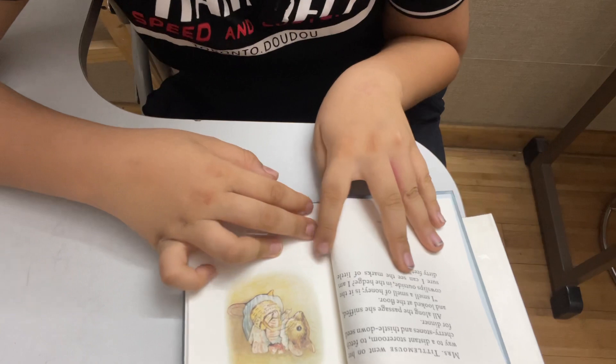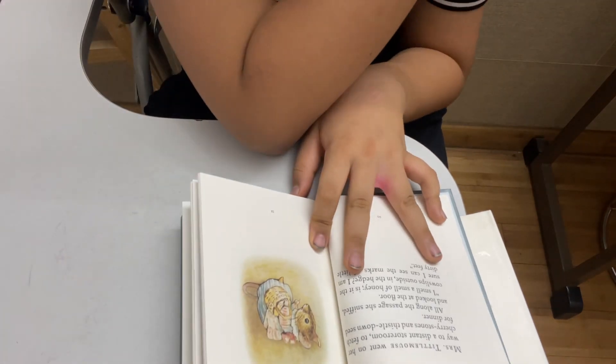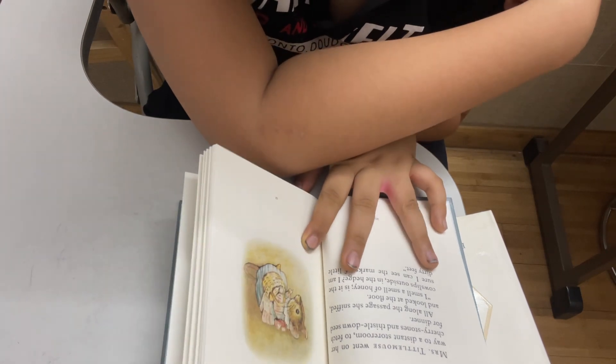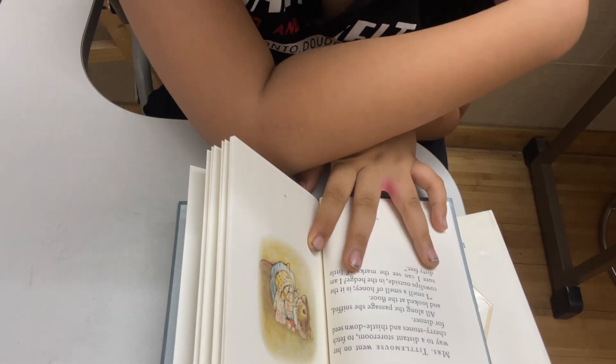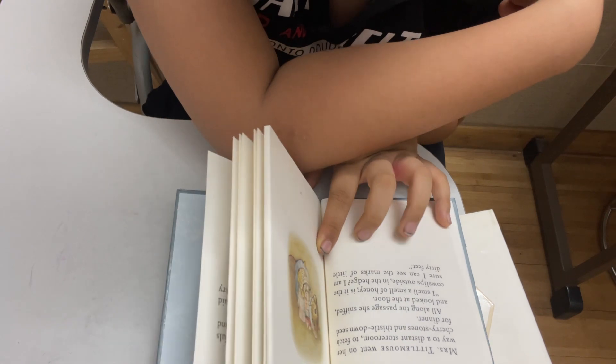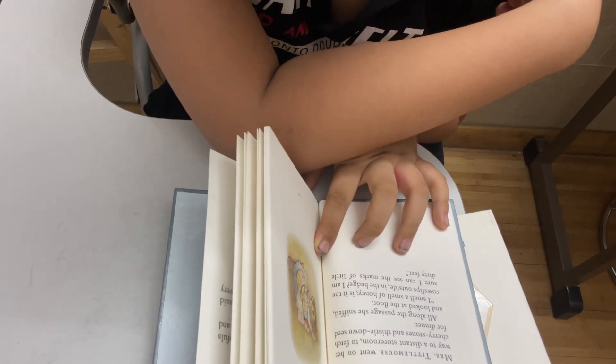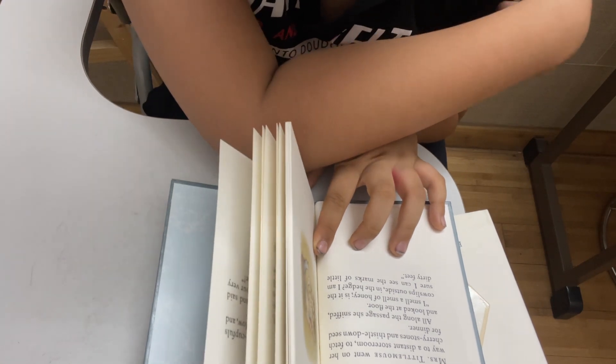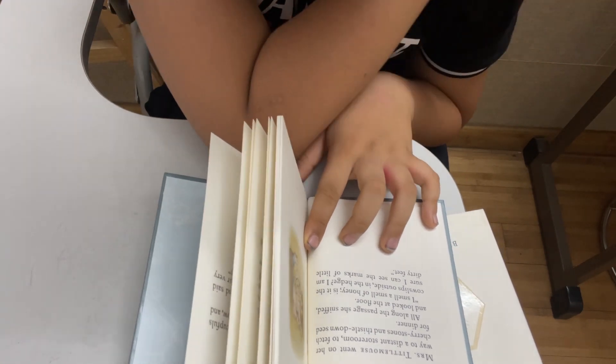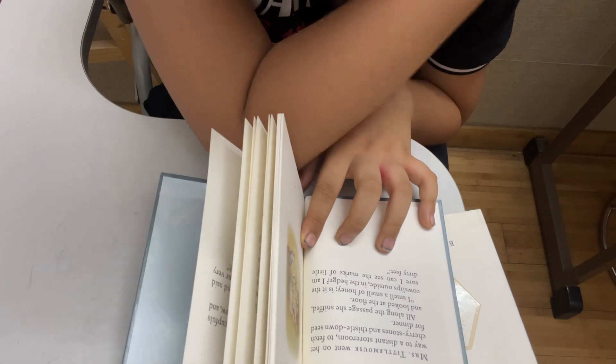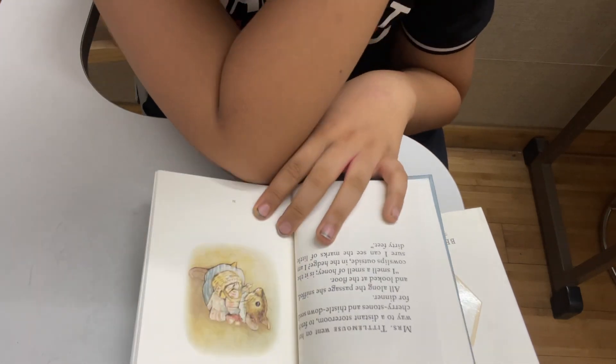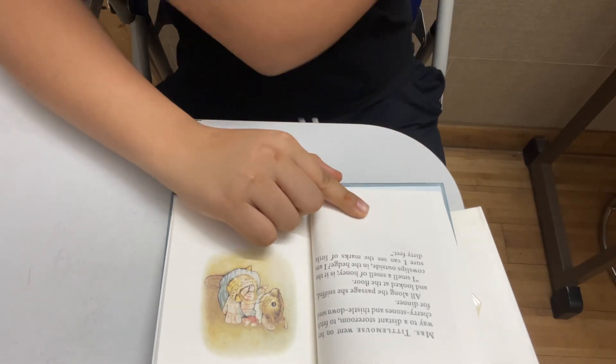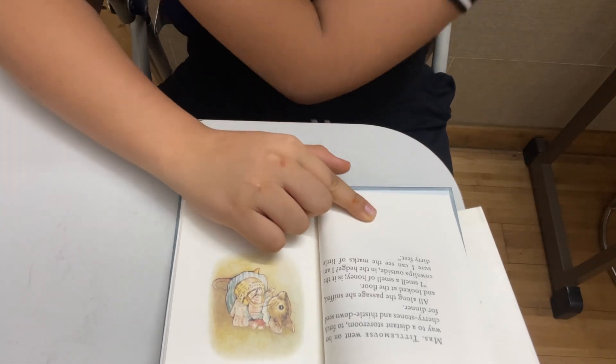Mrs. Tittlemouse went on her way to a distant storeroom to fetch cherry stones and thistledown seed for dinner. All along the passage, she sniffed and looked at the floor. I smell a smell of honey. Is it the cowslips outside in the hedge? I'm sure I can see marks of little dirty feet.